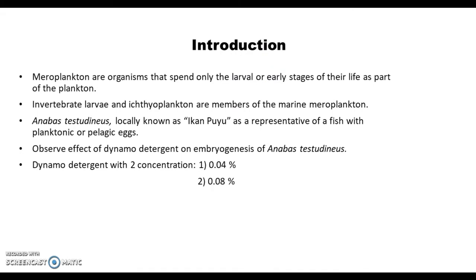For the introduction, meroplankton are organisms that spend only the larval or early stage of their life as part of the plankton. Invertebrate larvae and ichthyoplankton are members of the marine meroplankton. In this experiment, we use Anabas testudineus, which is locally known as ikan puyu, as a representative of a fish with planktonic or pelagic eggs.